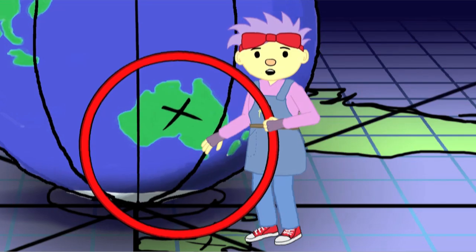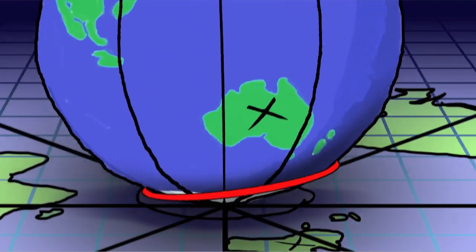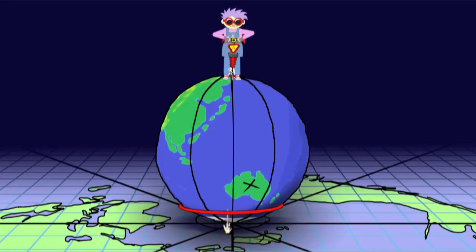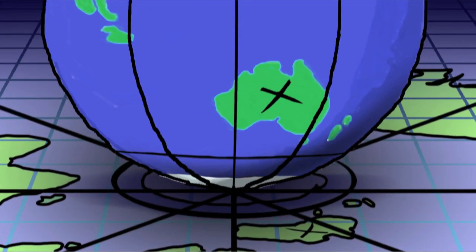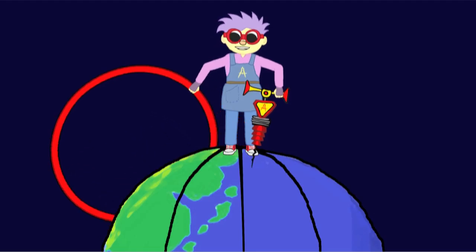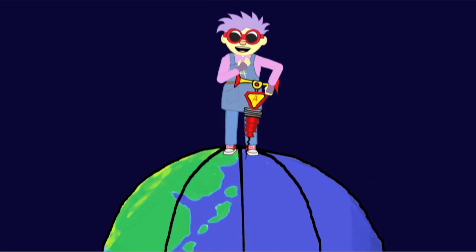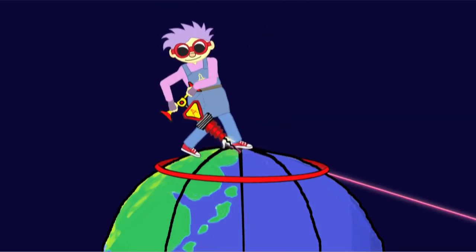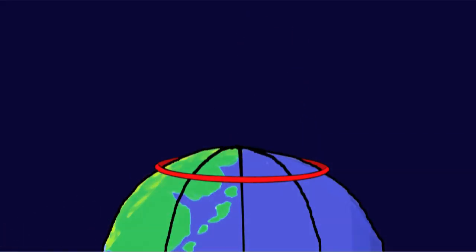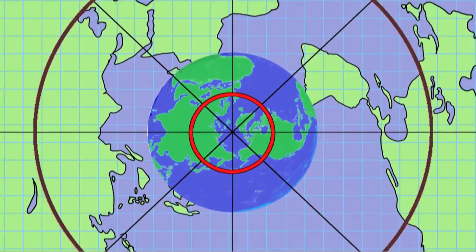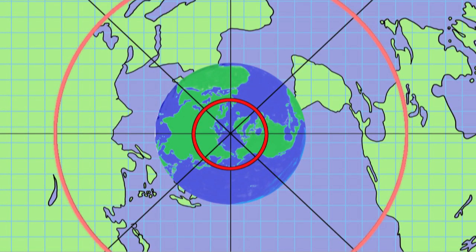If I put a hula hoop around Antarctica and trace it with my laser beam, both circles are about the same size. But if I take the same hula hoop and put it around the North Pole, the circle I traced is enormous! These distortions show that our projection changes the size of the continents.